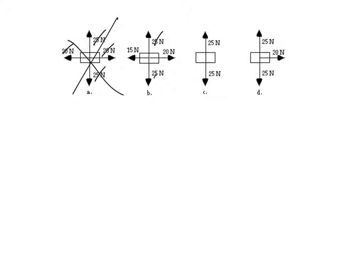25, 25 cancelled. 20 and 15, unbalanced. This guy is accelerating. 25 and 25, this is not accelerating because they're balanced. That guy's either at rest or moving at constant velocity. 25 and 25 cancelled. That leaves the 20. This is an unbalanced one, so it has to be accelerating.